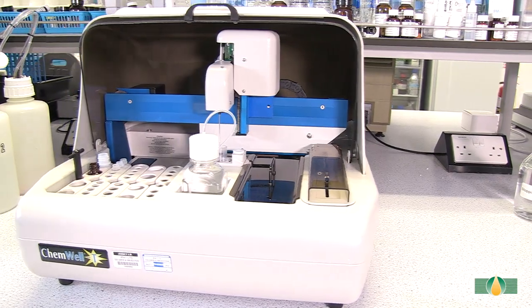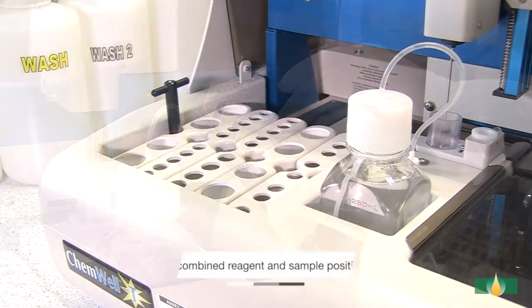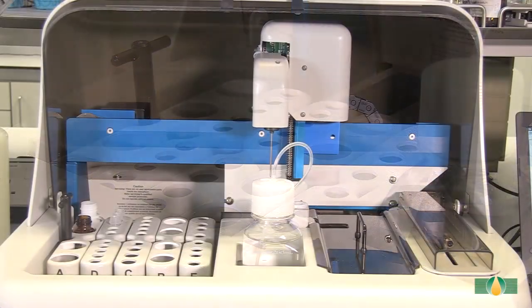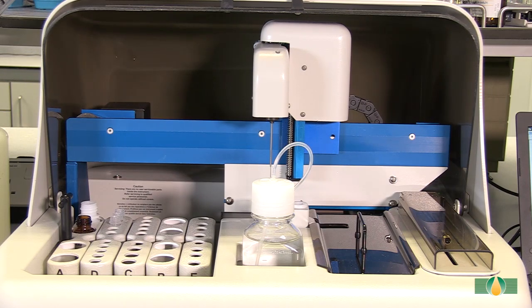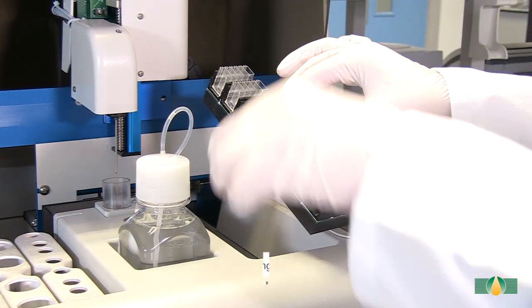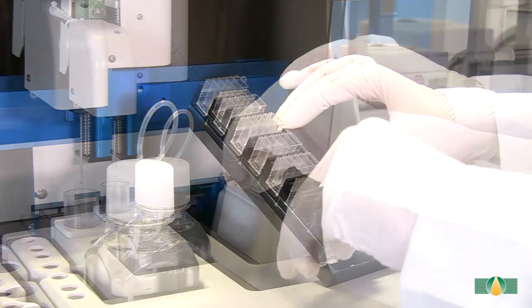The ChemWell-T performs biochemistry assays in one centimeter path length cuvette strips. Equipped with 35 combined reagent and sample positions, it is capable of performing 40 tests without intervention at up to 100 tests per hour. Cuvettes are easy to load and unload, and the continuous loading capability allows tests to continue with ease.